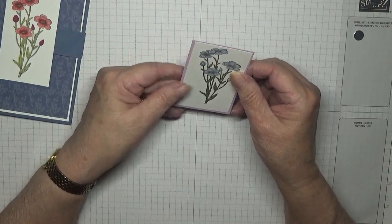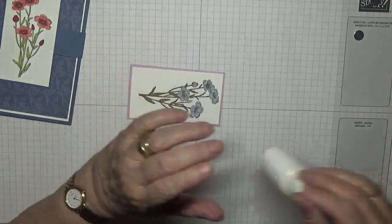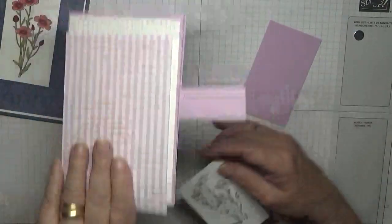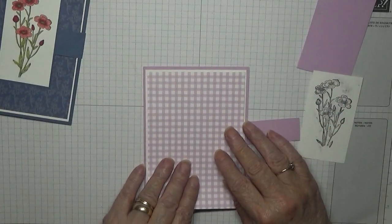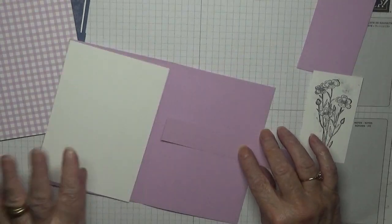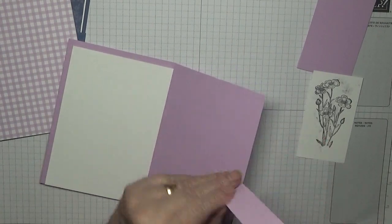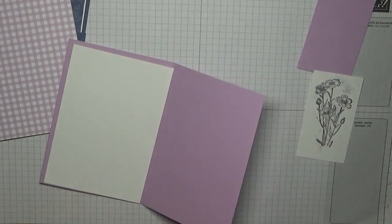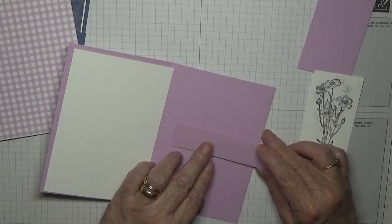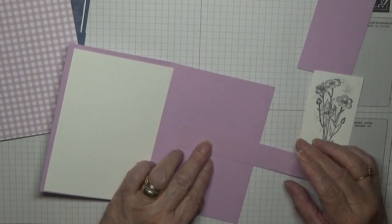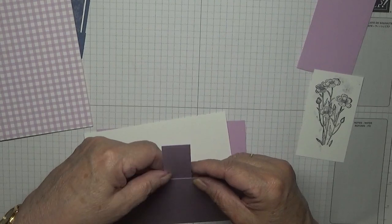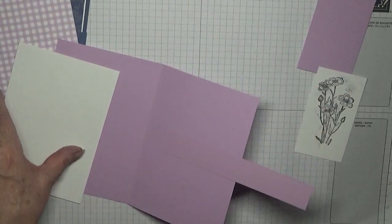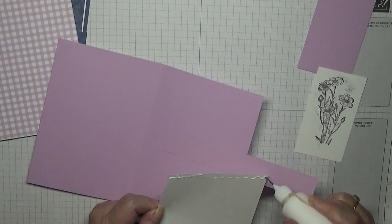That actually looks quite nice. Oh no, I don't want that there. Right, to bring this back, I need to glue this down in the middle of the card. So I'm going to glue it there and now I'm going to glue this on top of it so you can't see it.